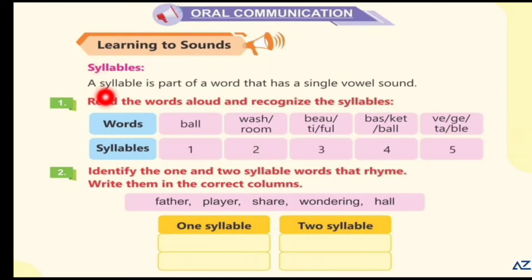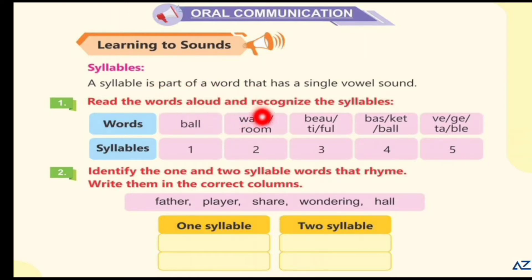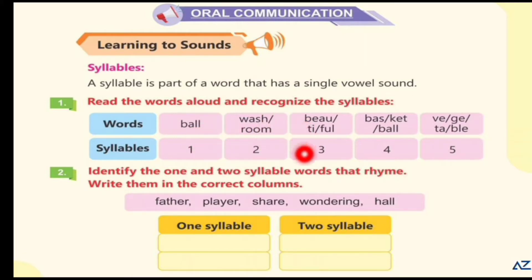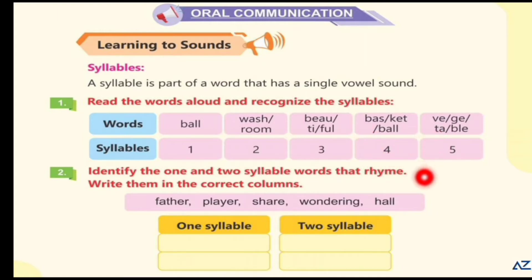Syllables. A syllable is part of a word that has a single vowel sound. Read the words aloud and recognize the syllables. Ball — one syllable. Washroom — two syllables. Beautiful — three syllables. Basketball — four syllables. Vegetable — five syllables.